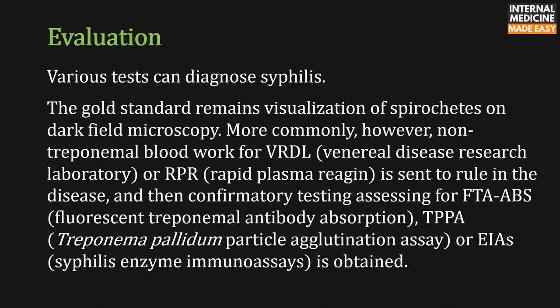Various tests can diagnose syphilis. The gold standard remains visualization of spirochetes, which can be used in dark field microscopy. More commonly, however, non-treponemal blood work for VDRL or rapid plasma reagin is sent to rule out the disease. Confirmatory testing assessing for fluorescent treponemal antibody absorption, Treponema pallidum particle agglutination assay, or syphilis enzyme immunoassays is then obtained.